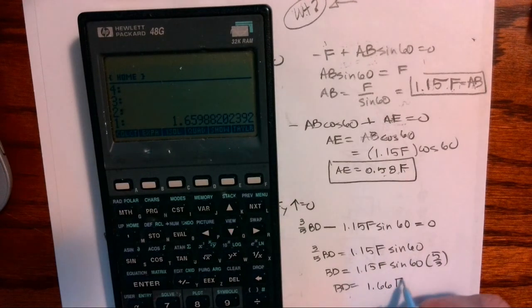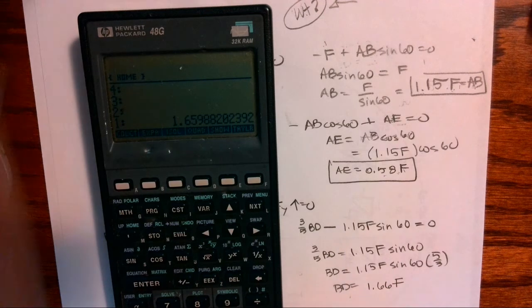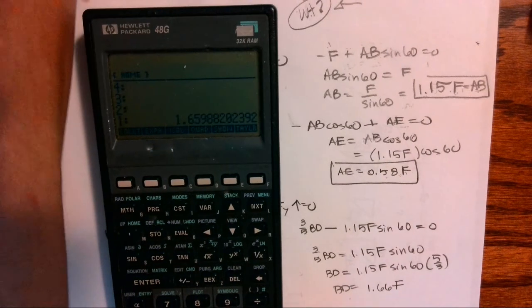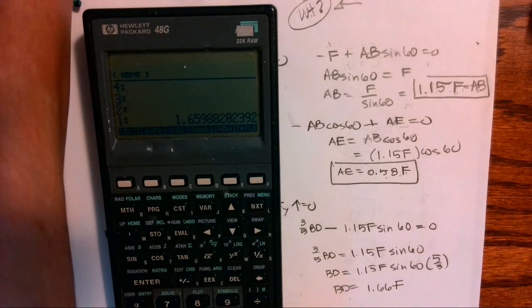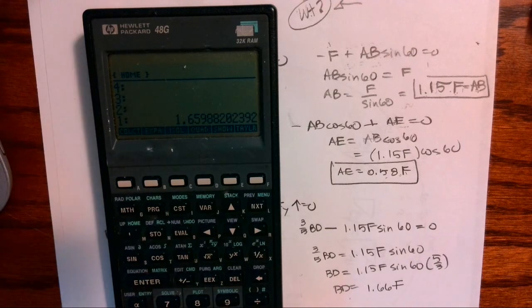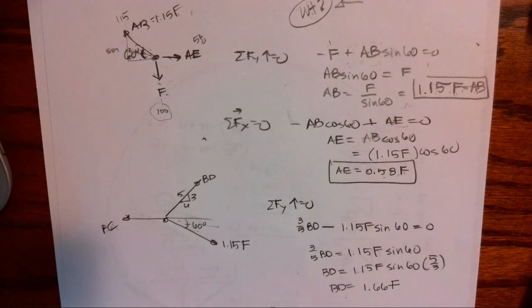Right, so that is a much larger ratio than what we had before. Okay, so let's sum forces in the X direction and see what cable BC is carrying.